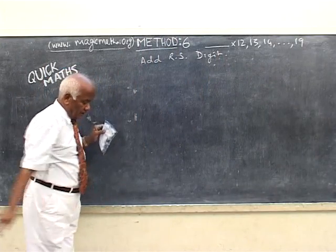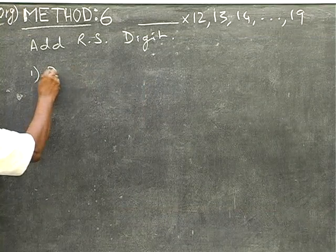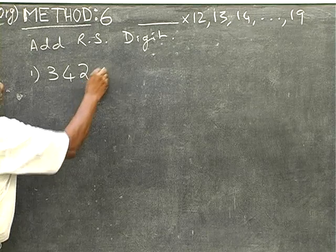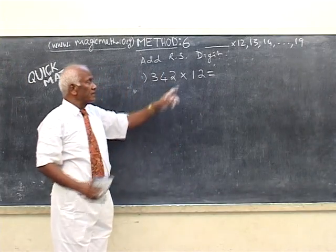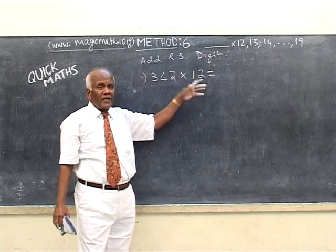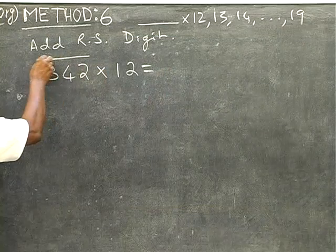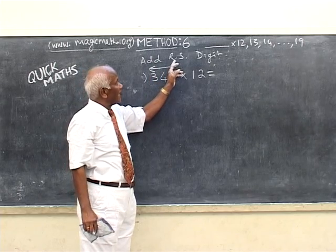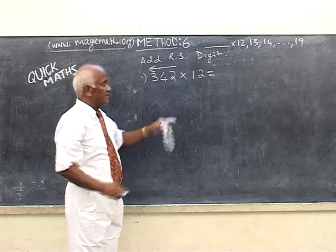So I will demonstrate with an example as usual. I take 13,402 into 12. Now I already mentioned, if I am multiplying by 12, we will in fact multiply only by 2. And we will multiply from right to left. And every time we multiply, add the right side digit. Let us start.